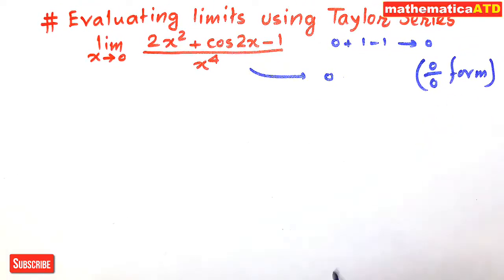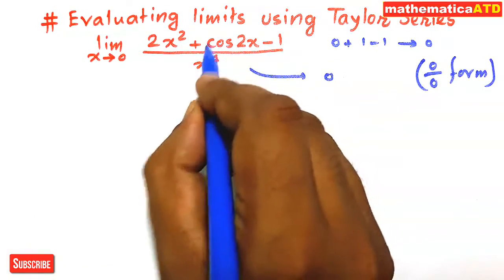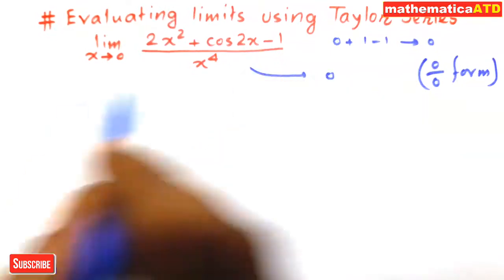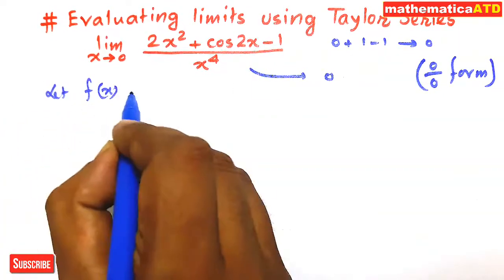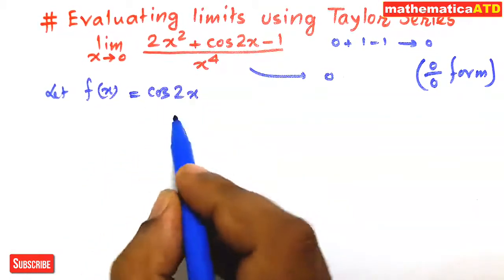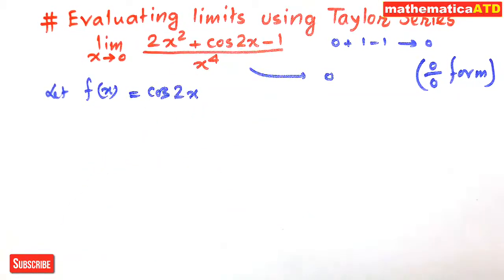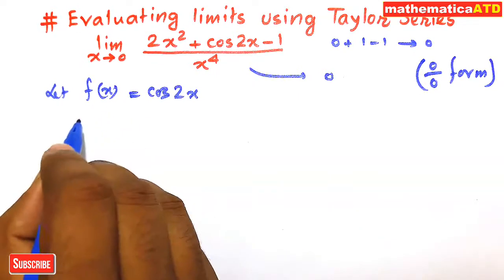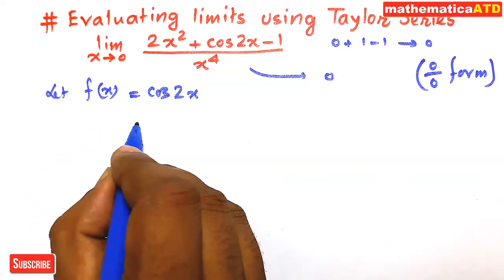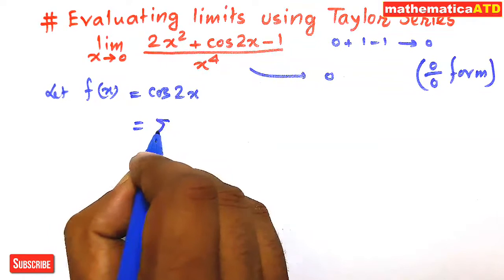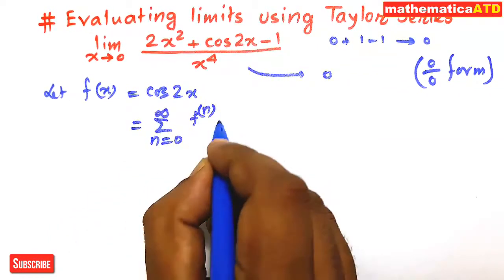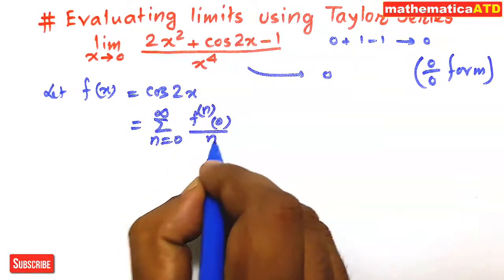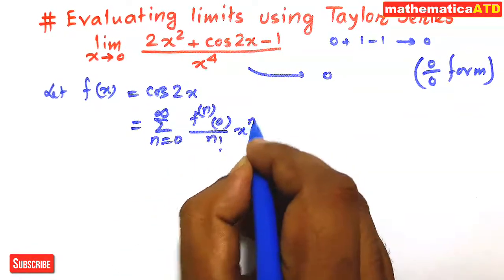So first of all, we shall find the Taylor series for the trigonometric function cos(2x). Let us consider f(x) = cos(2x). We shall use the Taylor series expansion: f(x) = Σ (n=0 to ∞) fⁿ(0) / n! · xⁿ.